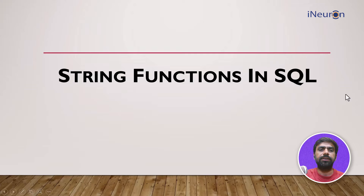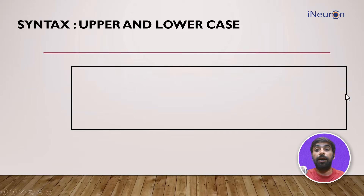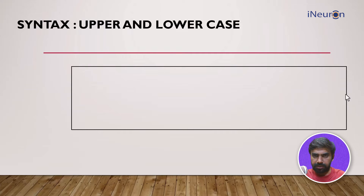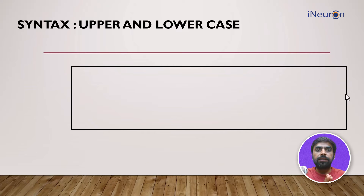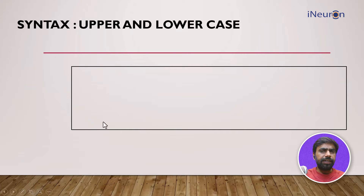Let's start with something very basic — the upper and lowercase functions. The upper function converts text which is in lowercase or a mixture of upper and lowercase. For example, if your name is written as 'Prateek' with a capital P, and you apply the upper function, the entire name 'Prateek' gets converted to capital letters for each and every alphabet. Similarly, the lower function does the vice versa.